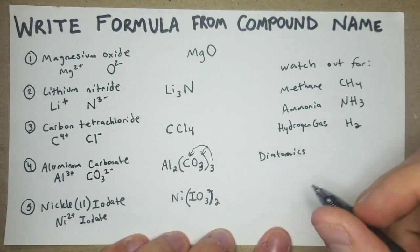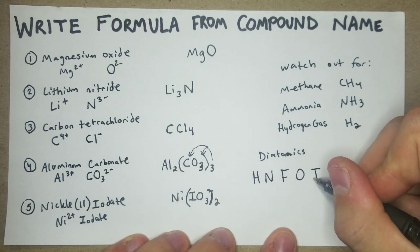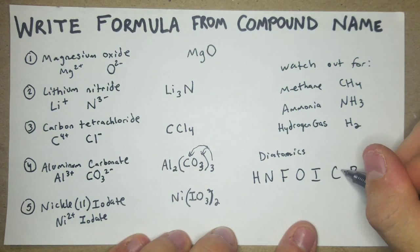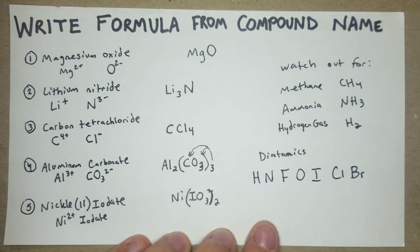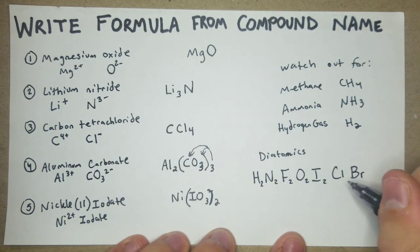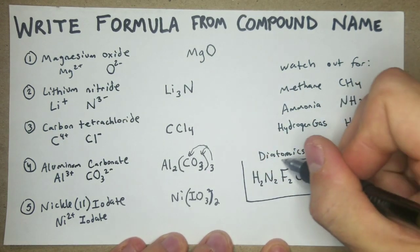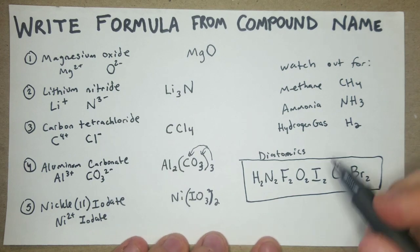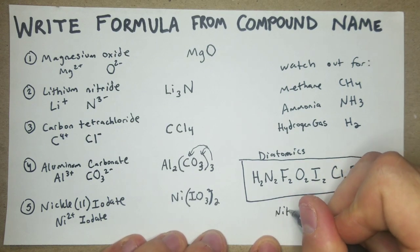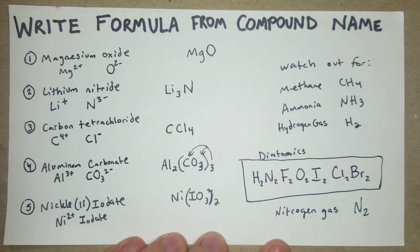A way to remember your diatomics is the mnemonic: 'Have No Fear Of Ice Cold Beer' — where C is Cl and B is Br. That gives you H2, N2, F2, O2, I2, Cl2, and Br2. Watch out for these — if asked for nitrogen gas, the formula is N2, not just N.